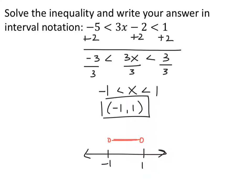Treating this as one compound inequality, whatever you do to one part you do to all three parts. Adding 2 to all three sides gives -3 < 3x < 3. Dividing everything by 3 gives -1 < x < 1, or in interval notation (-1, 1). On the graph, open circles on both -1 and 1, shading the part in the middle.